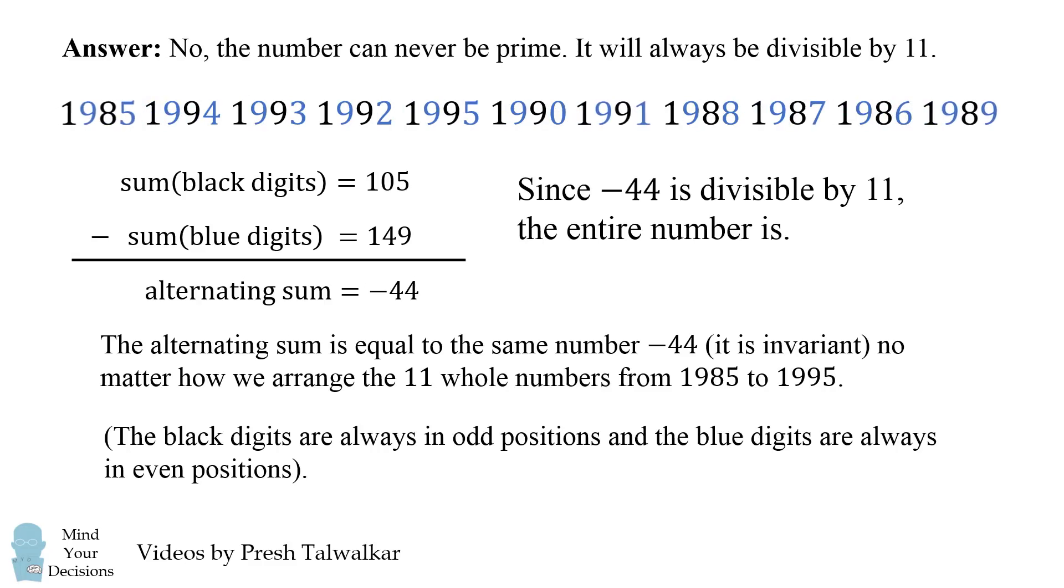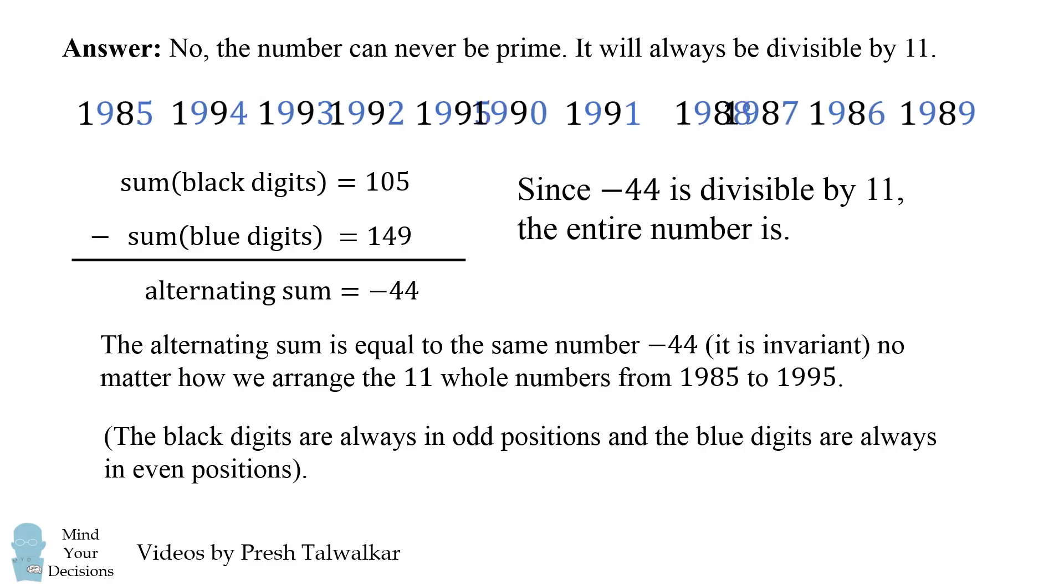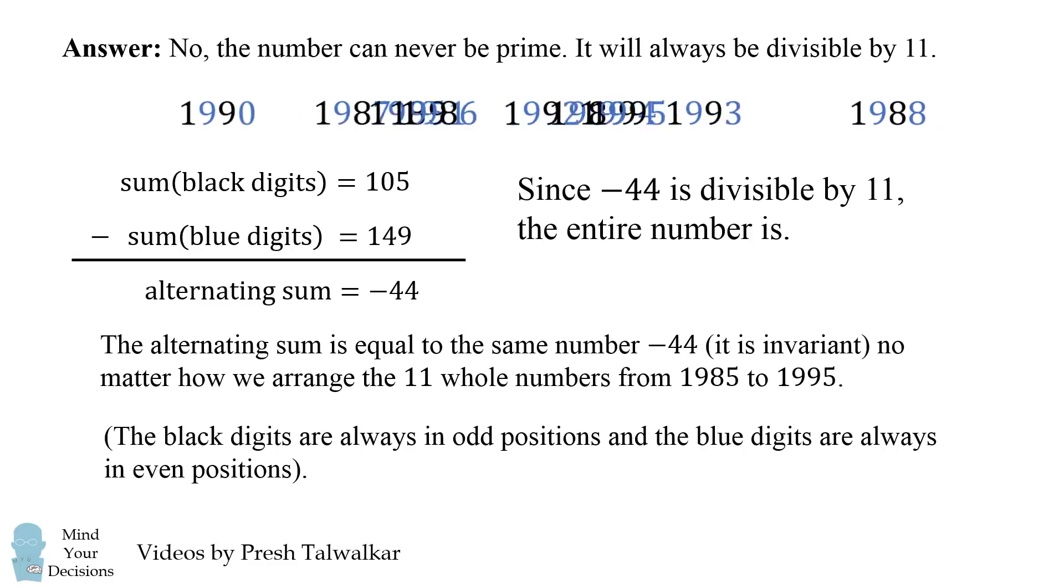Here's a little bit more complicated rearrangement. We're still going to have the same alternating sum of negative 44. It'll be true no matter how we arrange these 11 numbers.